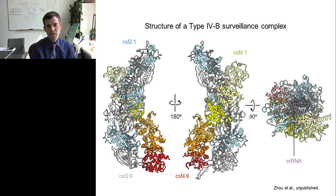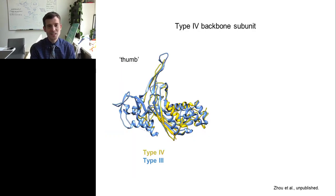What can we glean from this atomic model? First is to look at the backbone subunit. If you look at the type 4 backbone subunit, which is in gold compared to a type 3 backbone subunit, you can see that they are almost superimposable. It has an RMSD of approximately two angstroms. You can see that it shares this common palm domain and then this thumb region at the top.